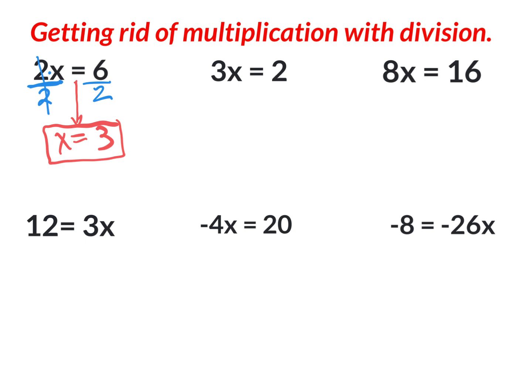The next one says three times x equals two. You want to get rid of the multiplication with the inverse operation, which is division. Put a division bar, put the three right there, do to one side do to the other — divide by three. Three divided by three eliminates, the equal sign comes straight down. On the left side the three is eliminated and all you have left is x. On the right side, two divided by three — we can't do it — so we leave it as a fraction.